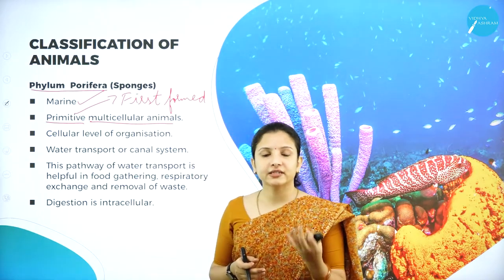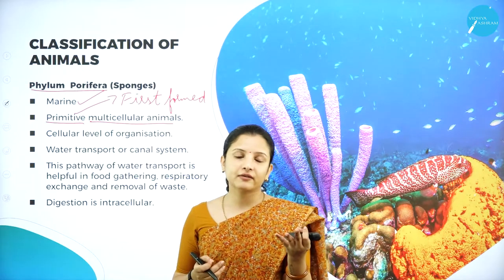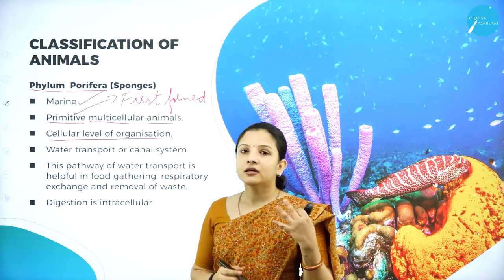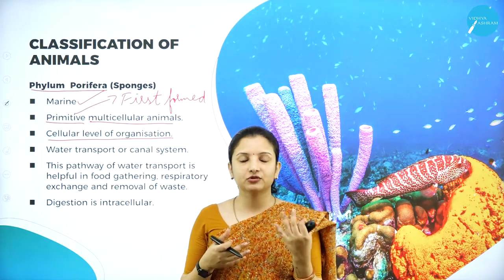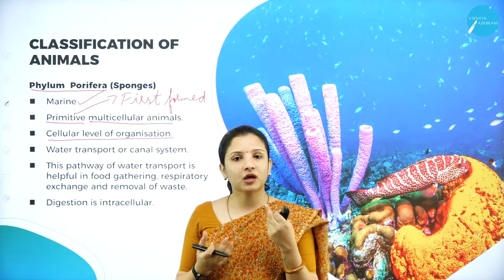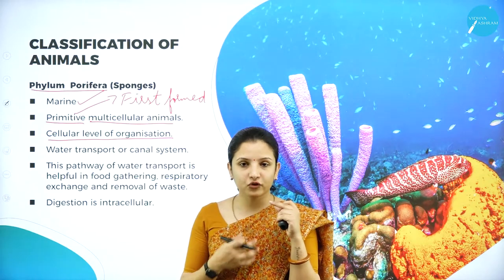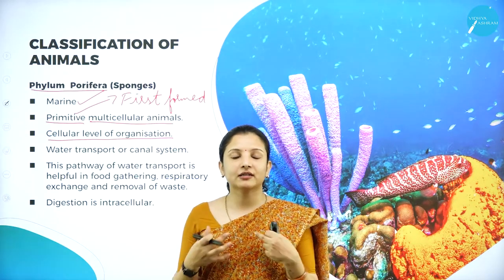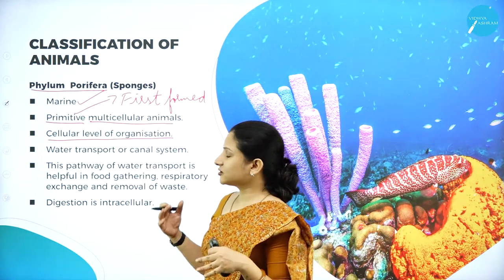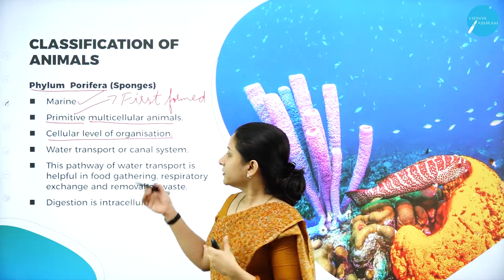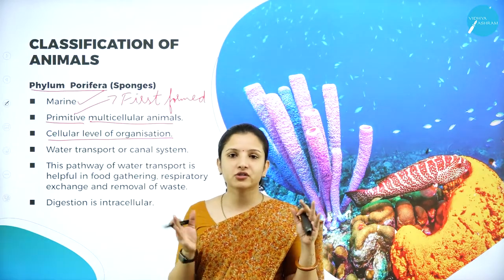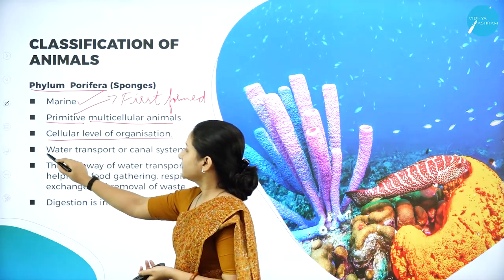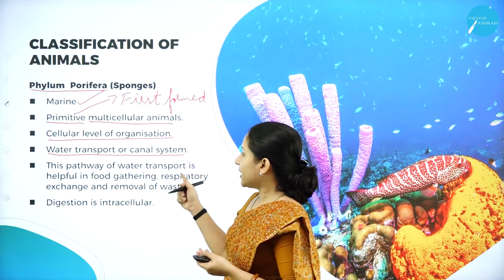Sponges have a cellular level of organization, and their water transport is through a canal system. In our body, water transport takes place through a proper food pipe carried to different parts of the body at the organ and organ system level. But in the case of sponges, since they don't have organs or an organ system, they just have a canal system through which the water passes into the sponge - it's just like a water pipe.